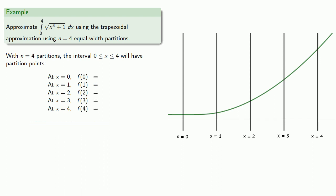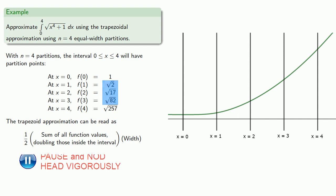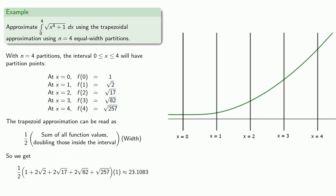We find our function values. And we can read the trapezoidal approximation as one-half the sum of all the function values, doubling those that are inside the interval. In other words, not the first, not the last, but all the others. And so we find our trapezoidal approximation.